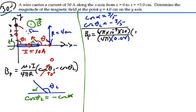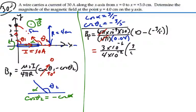Cosine theta one is going to be zero, minus cosine theta two, which is negative three-fifths. So four pi's cancel out, and this is equal to three times ten to the minus six, over four times ten to the minus two, times a negative negative, which would be three-fifths.